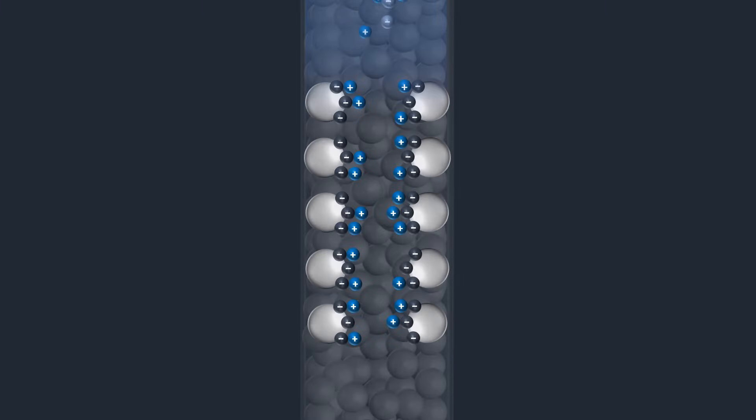When equilibrium is reached, all stationary phase-charged groups are bound with exchangeable counter-ions, such as chloride or sodium.